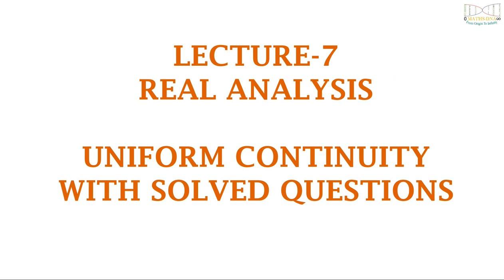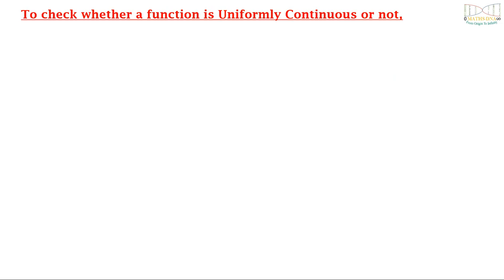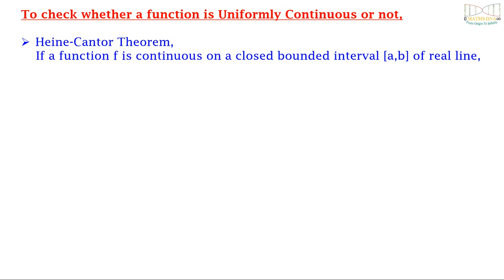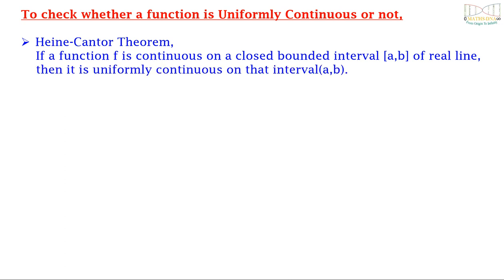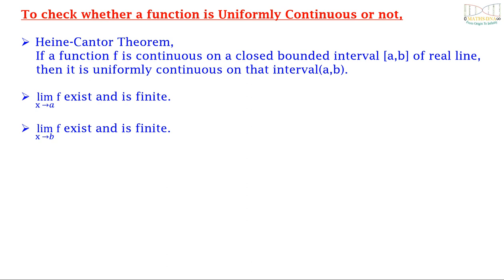This is my 7th lecture on real analysis and the topic is uniform continuity. Now how do we check that a function is uniformly continuous or not? For that we have the Heine-Cantor theorem, which states that if a function f is continuous on a closed bounded interval [a,b] of the real line, then it is uniformly continuous on that interval. This means if the limit as x tends to a of f exists and is finite, and the limit as x tends to b of f exists and is finite, then f is uniformly continuous on the open interval (a,b).